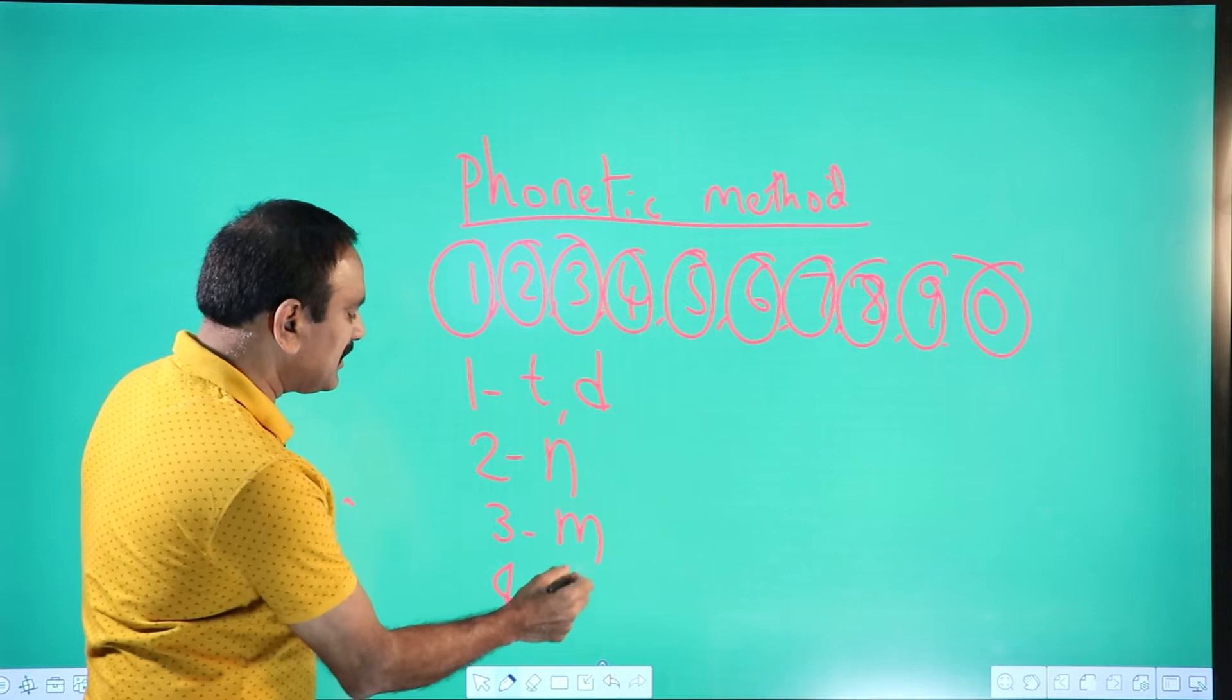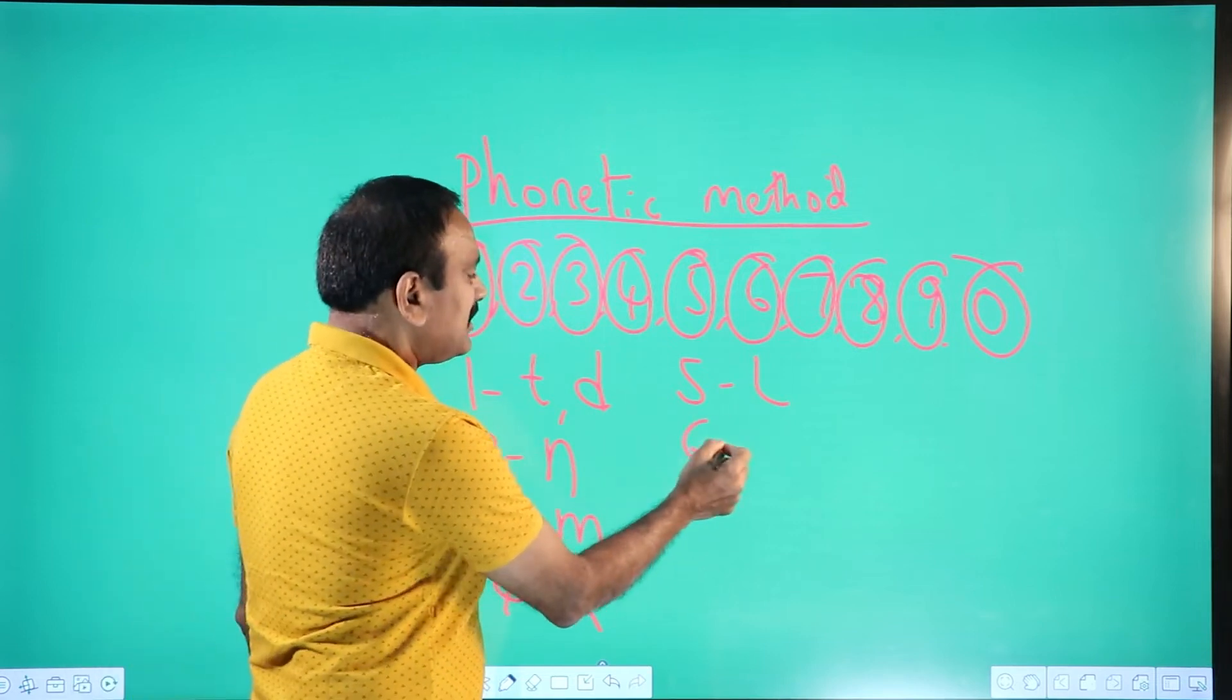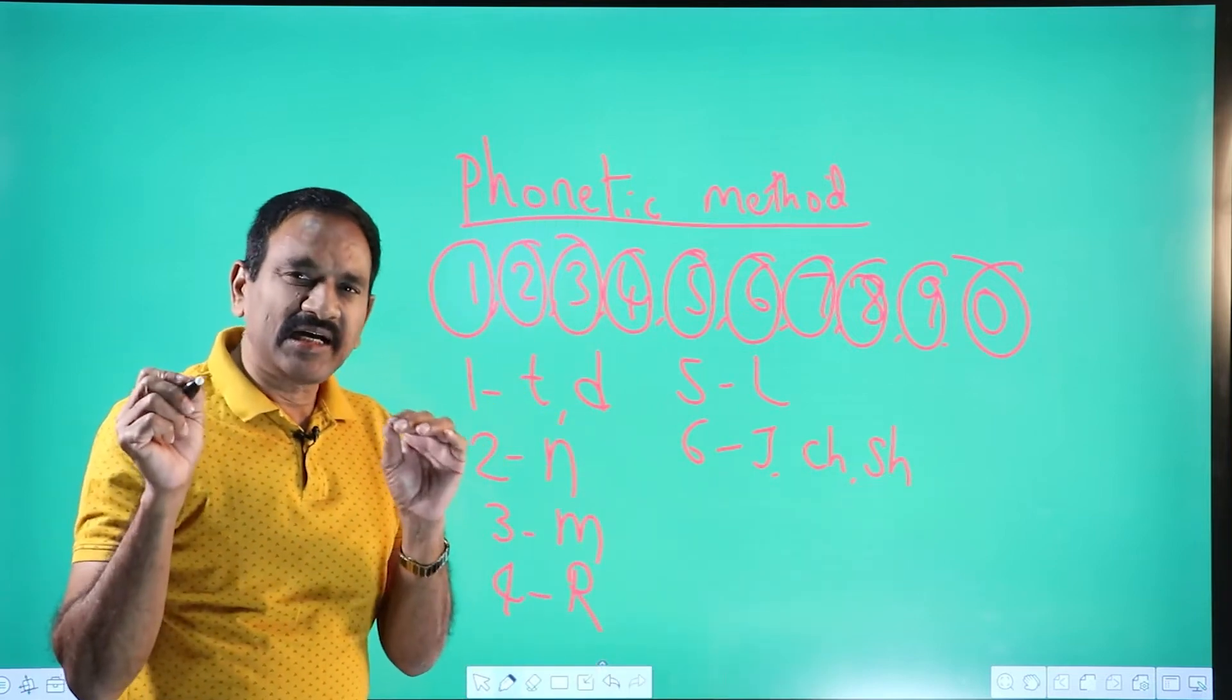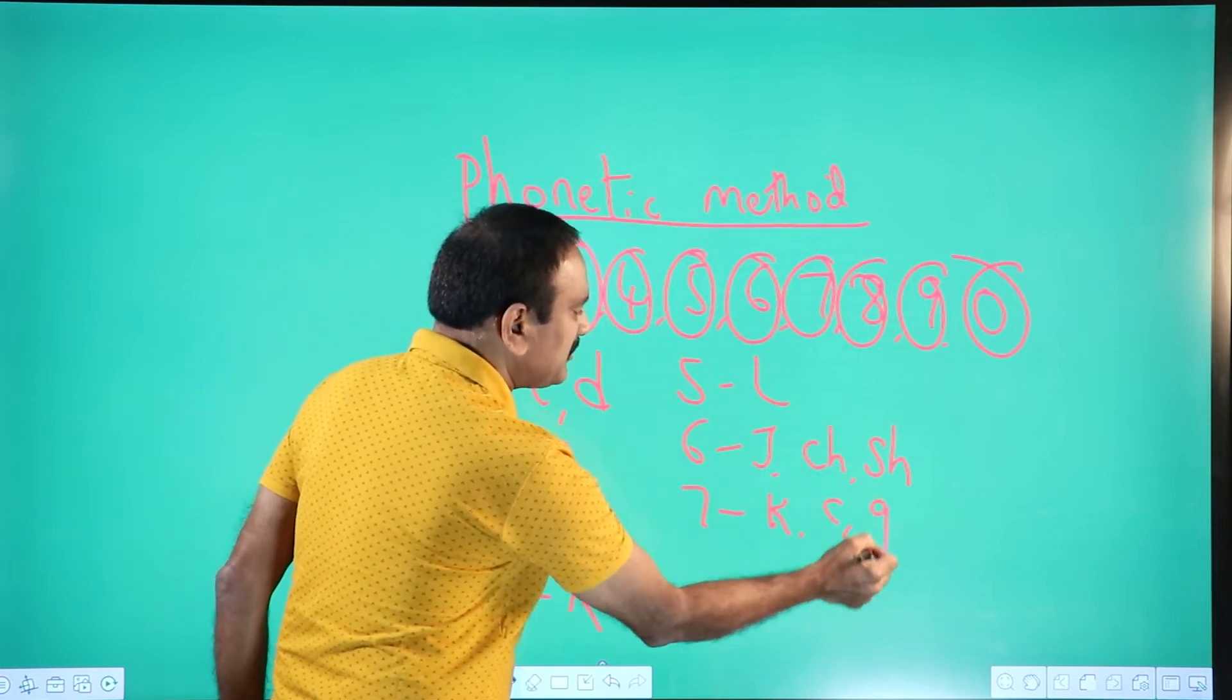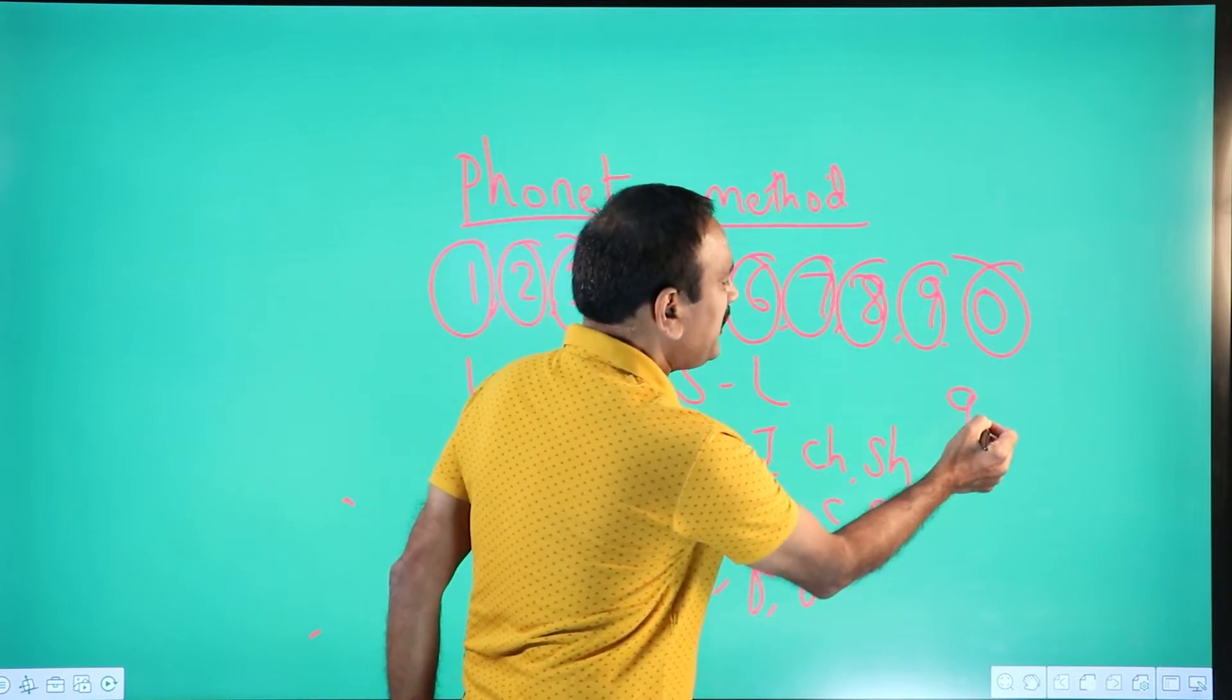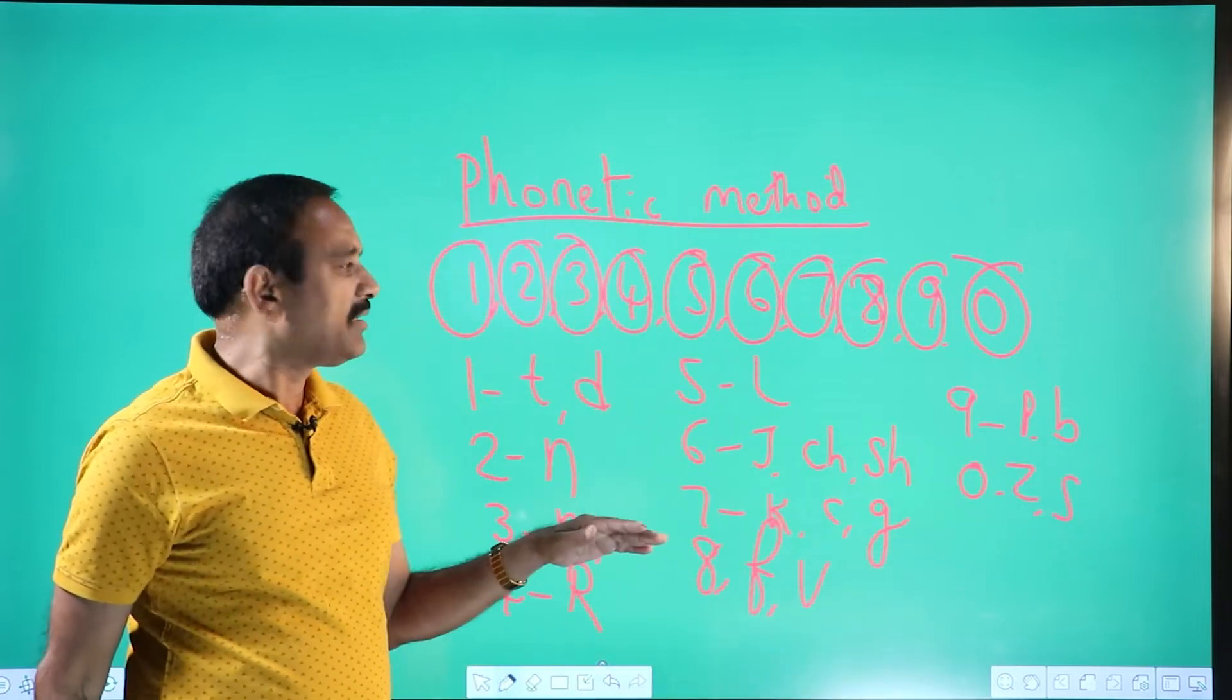4 means R. RA sound becomes 4. 5 means L. LA sound becomes 5. 6 means J, CHE. The base sound should be JA, CHA, SHA. 7 is K, C, G means KA, GA will become 7. 8 means F or V, FA or VA will become 8. 9 means P or B, PA or BA. And 0 means Z or S, ZA, SA. These are the sounds as per the phonetic method.